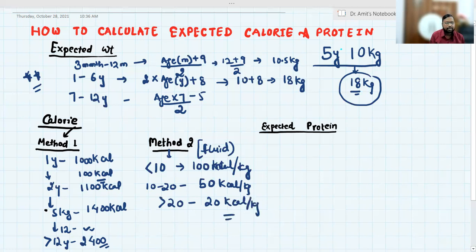So you can calculate by this. Suppose the child is 18 kg. So for 18 kg, for first 10 kg we have 1000 kilocalorie, and for next 8 kg, that is 400. So the net requirement is 1400 kilocalorie.